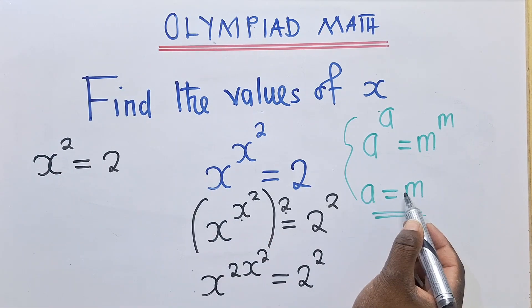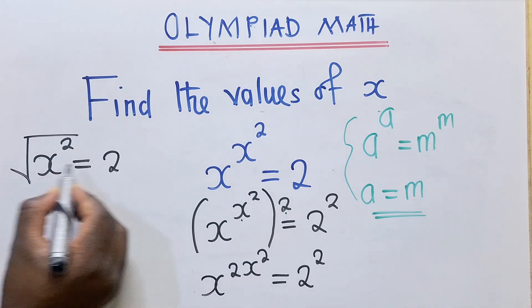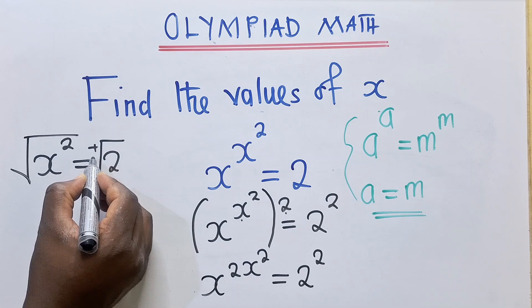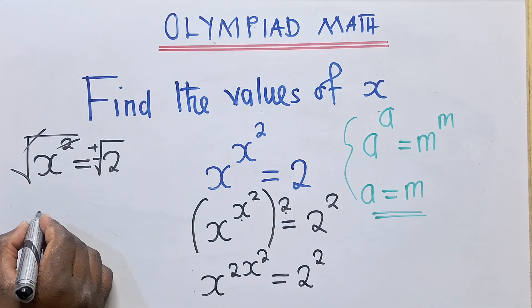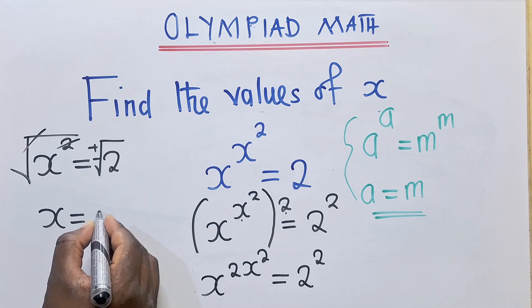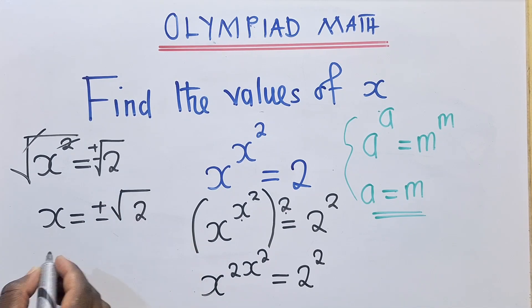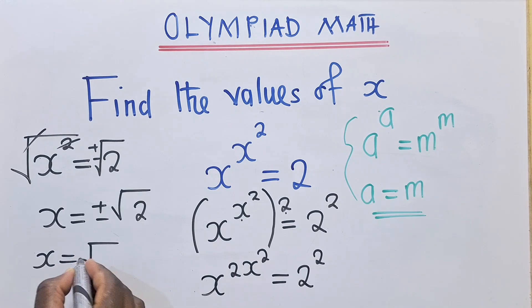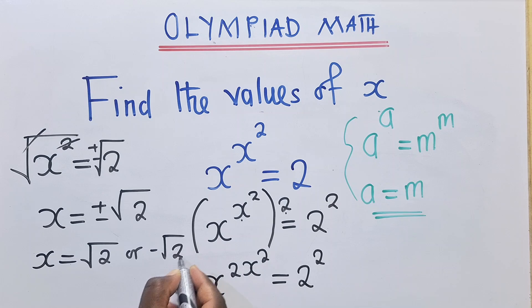So now to solve for x, we're going to square root both sides so that we can get rid of the power 2. So this power 2 and the root will go. We shall remain with x is equal to positive or negative square root of 2. So these are the two solutions.